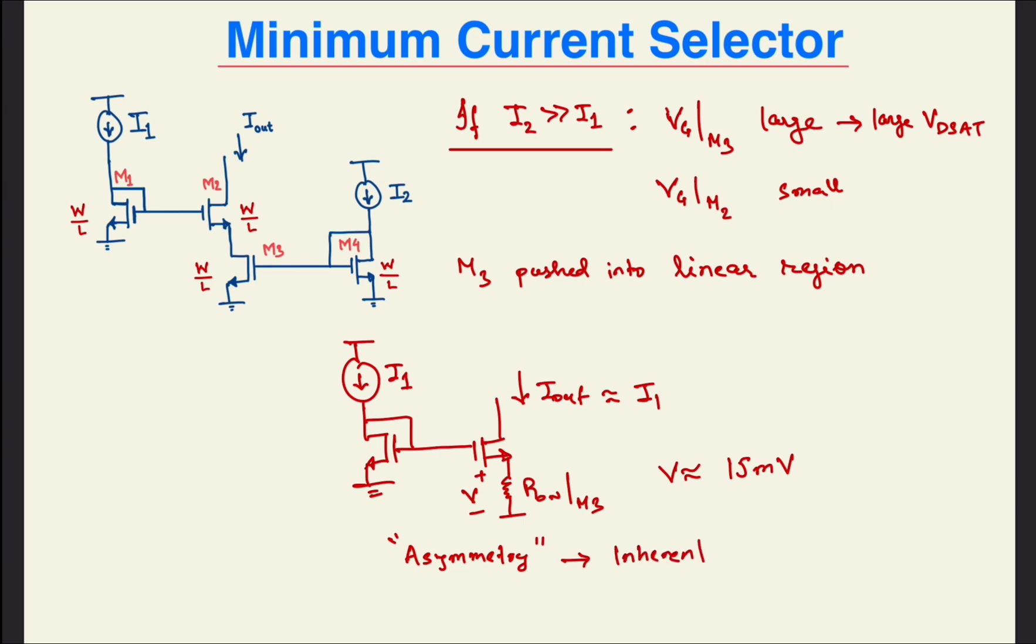Until now, we saw that if I1 is much much greater than I2, then you have Iout as I2, and if I2 is much much greater than I1, then Iout is about I1. So, it might be tempting to say that Iout gives the minimum of I1 and I2.